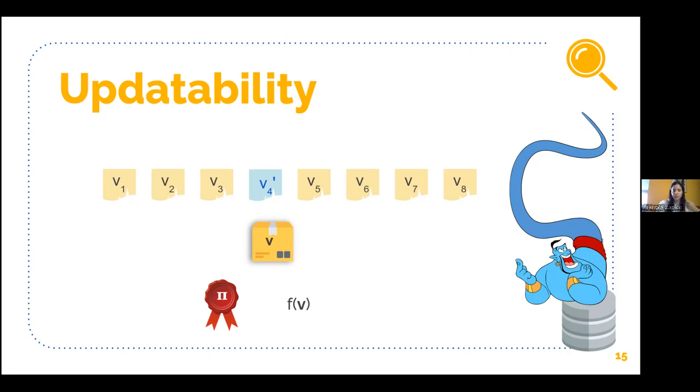Instead of having to create a new commitment and new proofs of all the statements our prover has already proven on this vector, what we want is that the prover can adapt or update both the commitment and any proof involving this position in a process that is much cheaper than computing them from scratch.